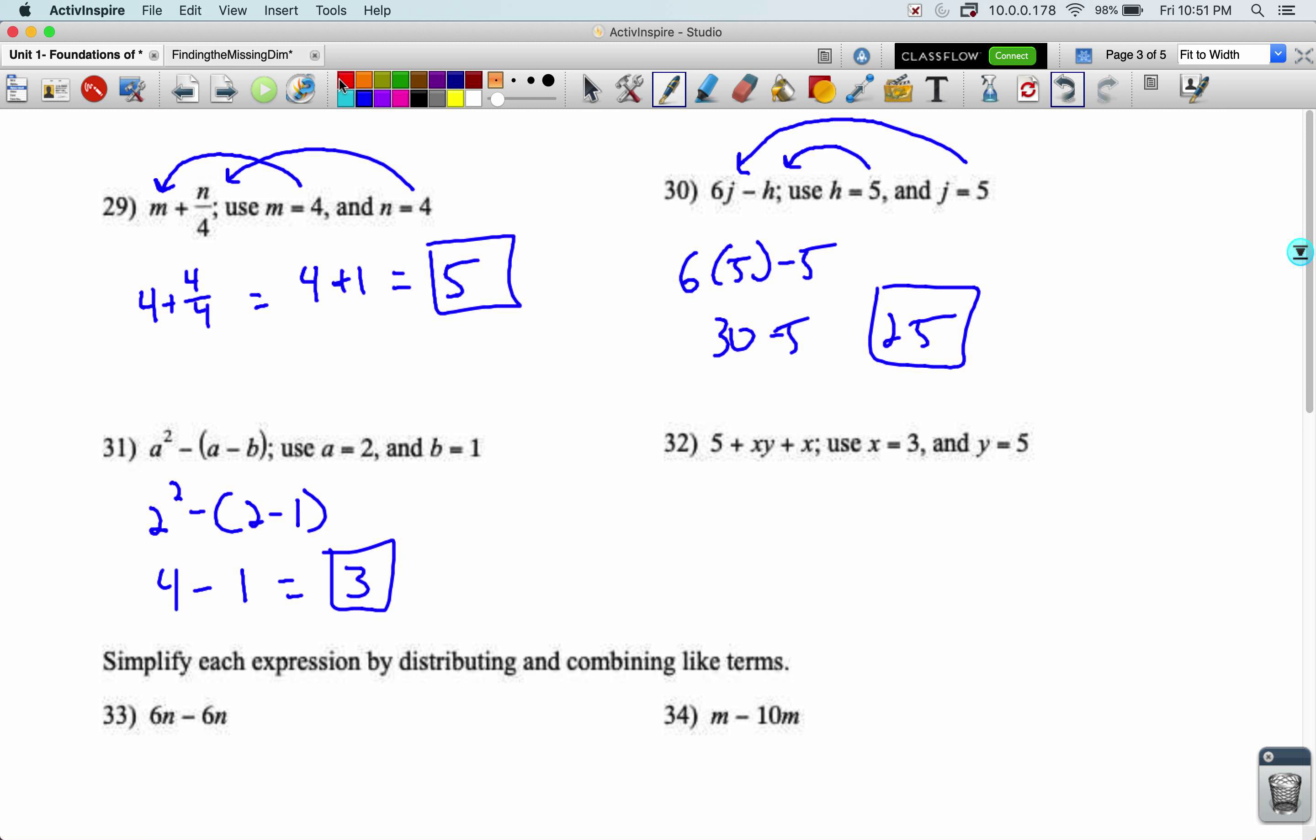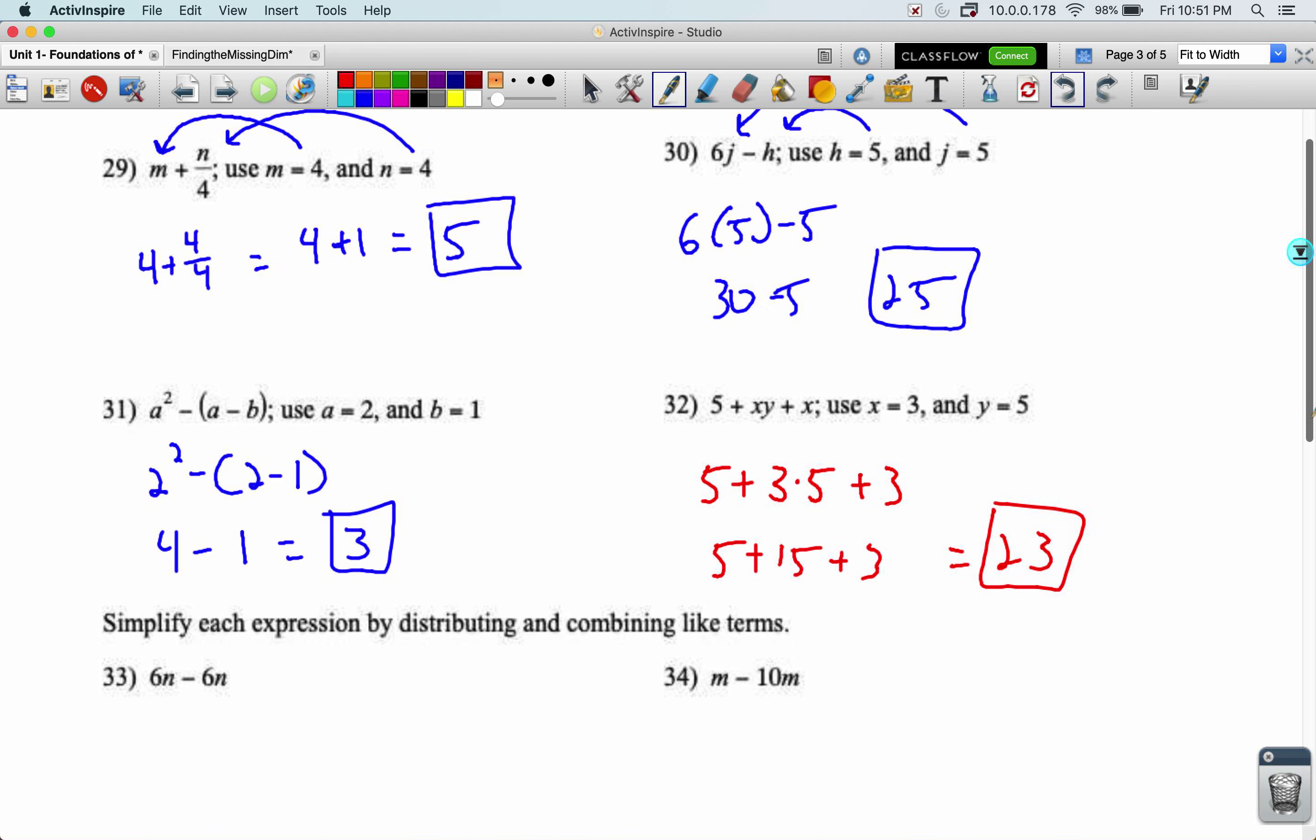And 32. Five plus X, Y means X times Y. So I'm going to do three times five plus X is a three. Five plus 15 plus three equals 23.